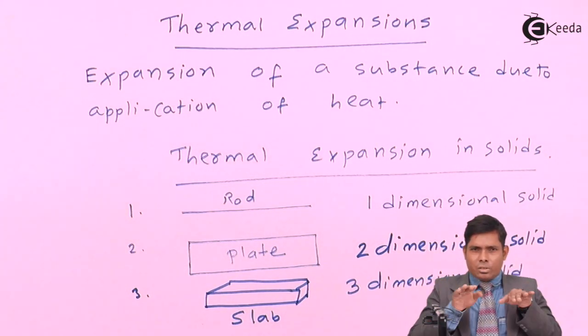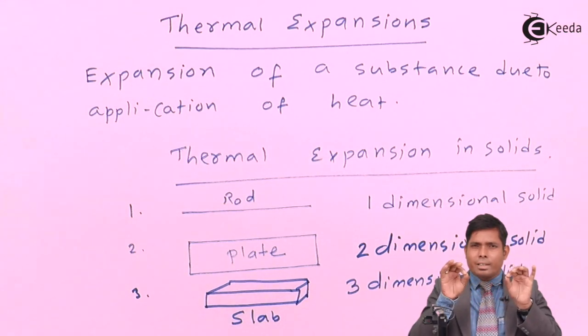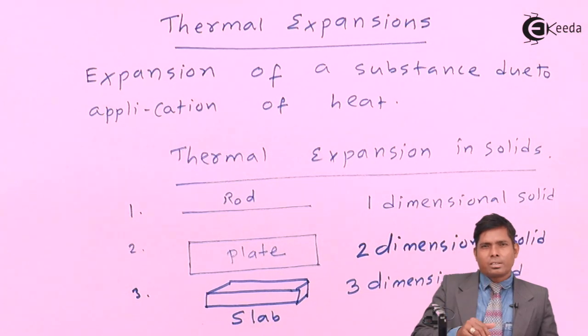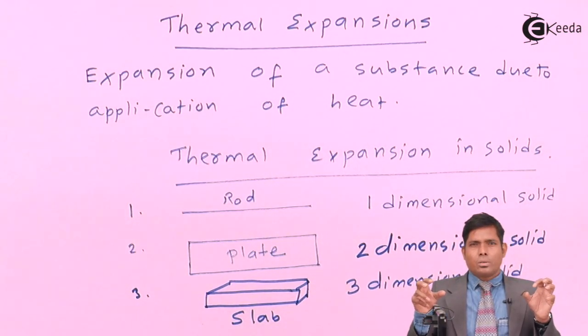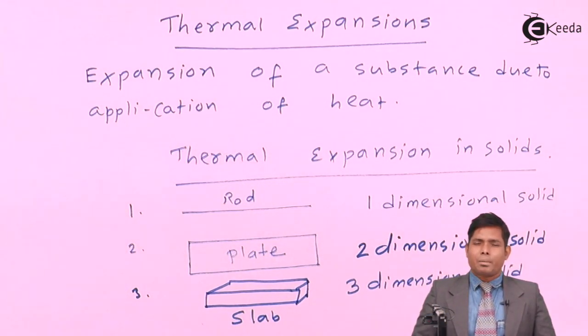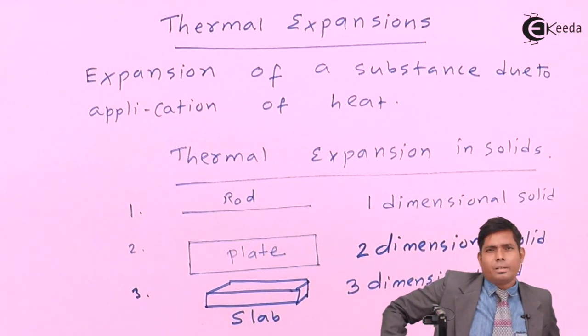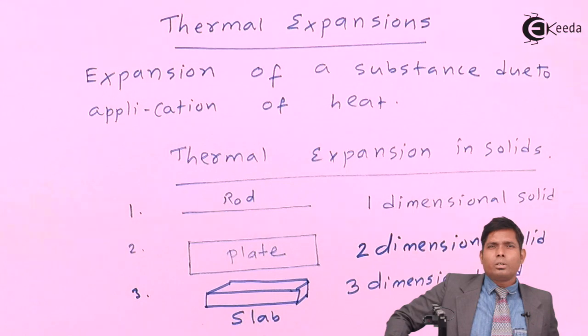In case of a plate-like structure, the thickness is neglected and length and breadth have applicable values. So, it is considered as two dimensional objects. In case of a slab or a brick-like structure, it has three dimensional structure. Its length, breadth and height. The height also plays a role and contributes to the dimensions of the object.